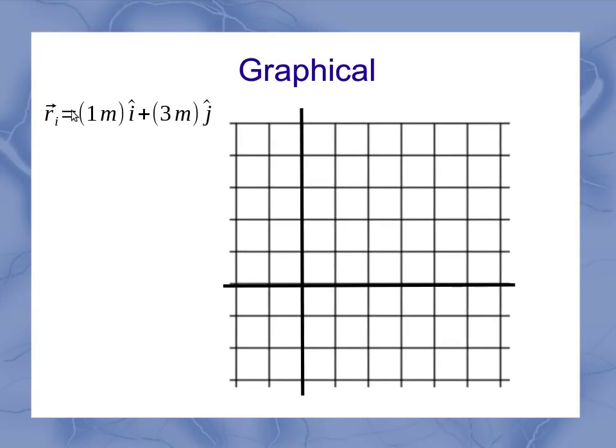Graphically, I could express my initial position, that 1 meter and 3 meters, in terms of a vector that moves right 1 meter and upwards 3 meters. My final position of 4 meters i hat plus negative 2 meters j hat means I've got a vector 4 to the right and 2 down.